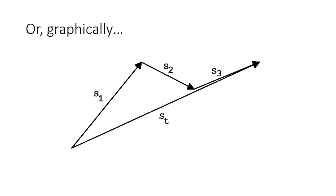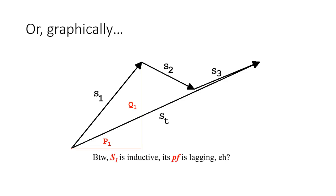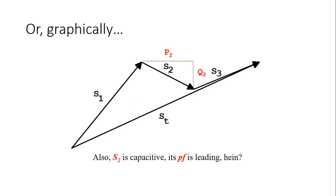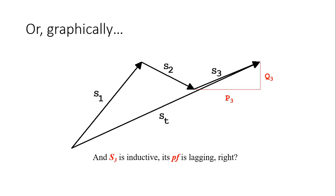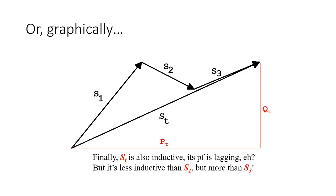Graphically, we could represent the three loads as complex powers S1, S2, S3. S1 is an inductive load — the power factor is lagging, so that load is absorbing P1 watts and Q1 vars, positive Q because it's an inductive load. The second load is capacitive, absorbing negative Q. The third one is absorbing positive Q — another inductive load. The sum of the three, which the sources will have to feed, is inductive as well. The sources will have to deliver Pt and Qt.